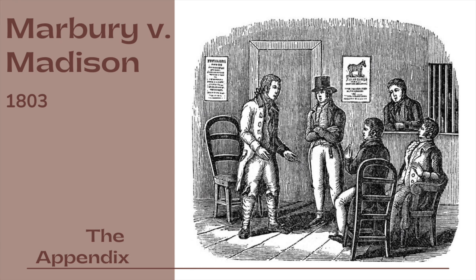The Constitution declares that no bill of attainder or ex post facto law shall be passed. If however such a bill should be passed and a person should be prosecuted under it, must the court condemn to death those victims whom the Constitution endeavors to preserve? No person, says the Constitution, shall be convicted of treason unless on the testimony of two witnesses to the same overt act, or on confession in open court. Here the language of the Constitution is addressed especially to the courts; it prescribes directly for them a rule of evidence not to be departed from. If the legislature should change that rule and declare one witness or a confession out of court sufficient for conviction, must the constitutional principle yield?